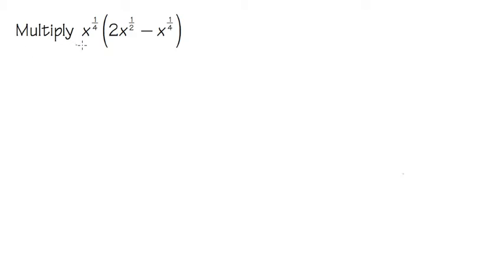In this question, we are going to multiply x to the 1 over 4 power times the parentheses 2 times x to the 1 over 2 power minus x to the 1 over 4 power. So the idea is that we'll take this and then distribute it into the parentheses and we'll get going from that.